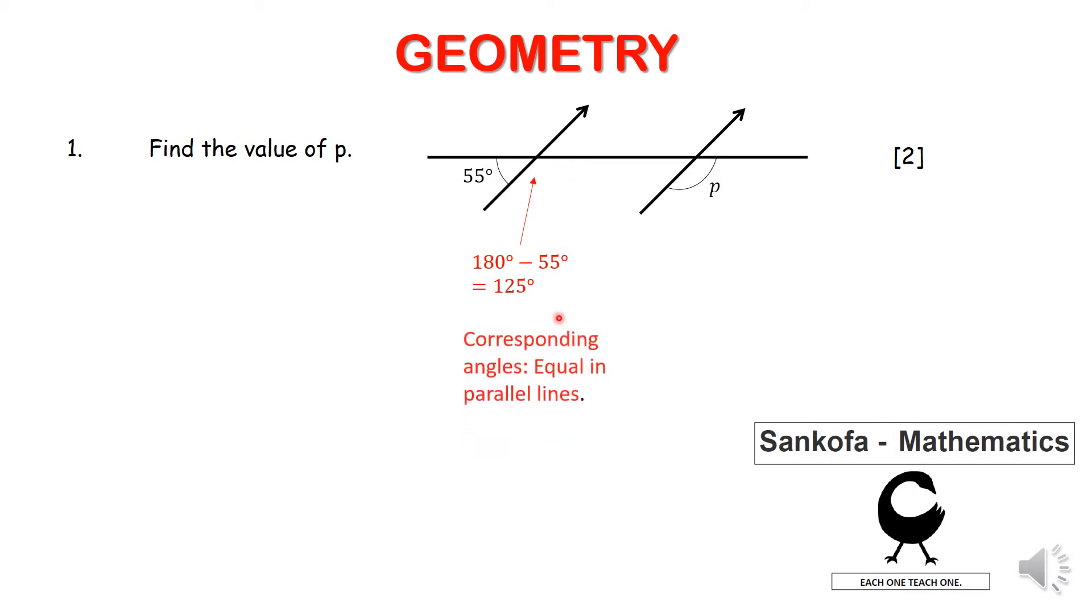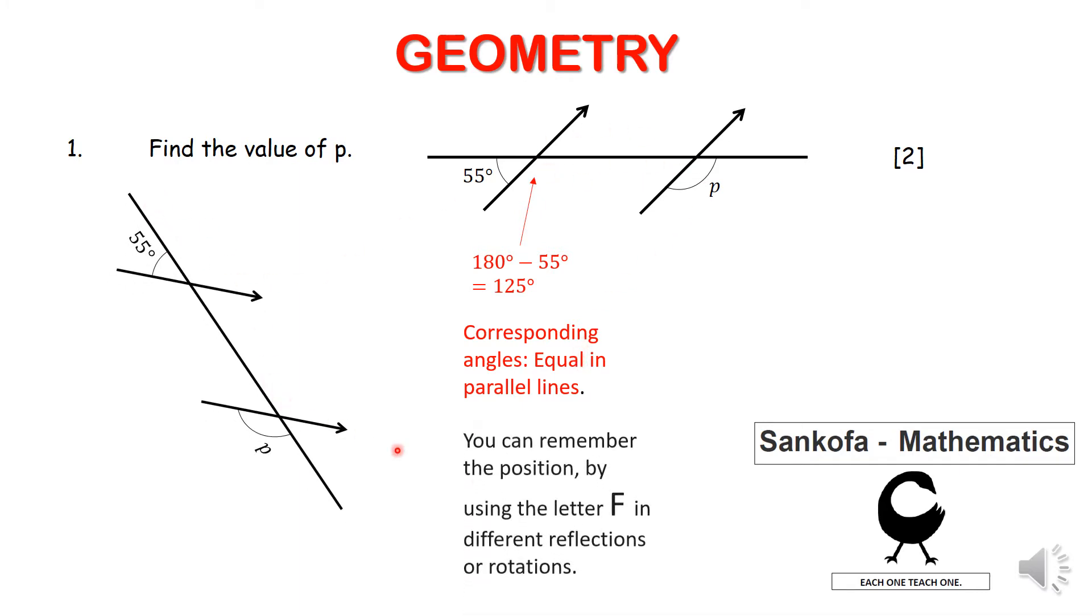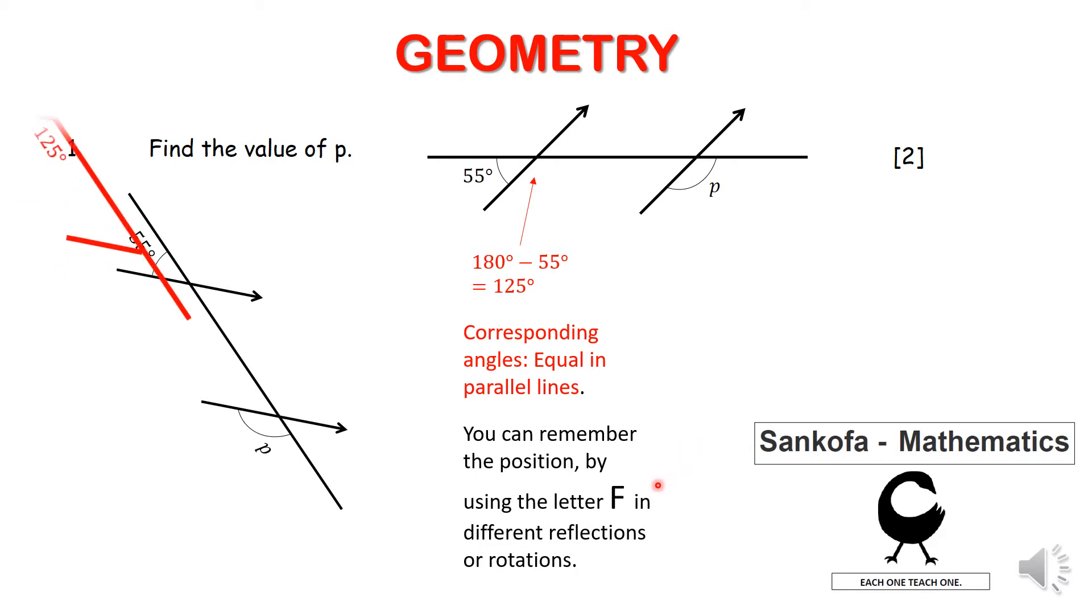So corresponding angles, they are equal in parallel lines. If you don't know what they are, let me take the same diagram. I switched it around and you can remember them by this F that you can create between parallel lines. So you can see the F right there. So what it means is this p should also be equal to 125 because corresponding angles are equal.